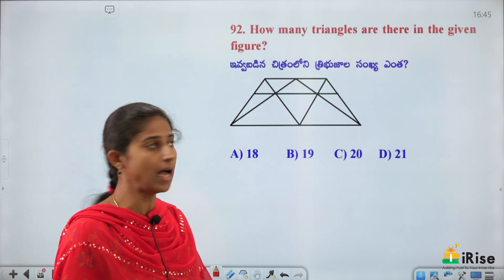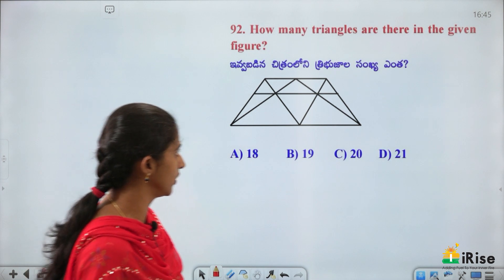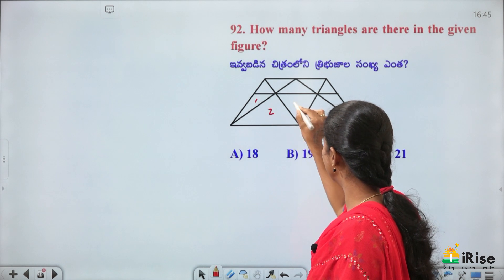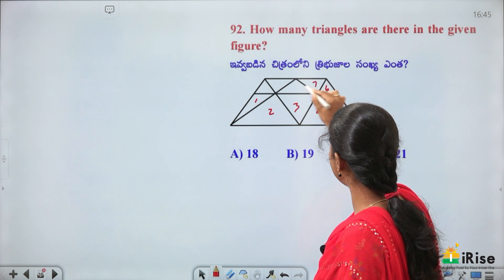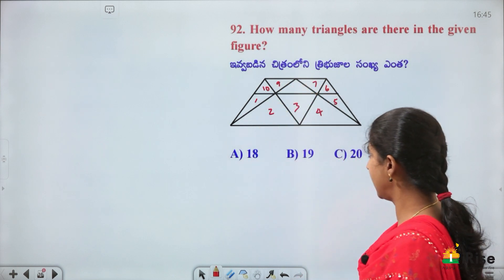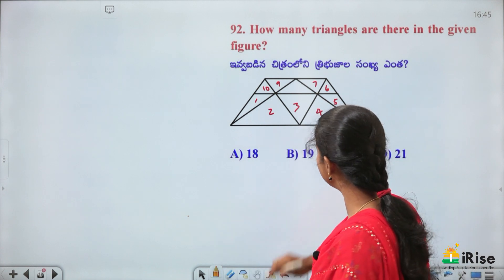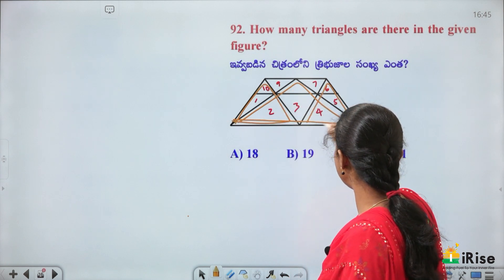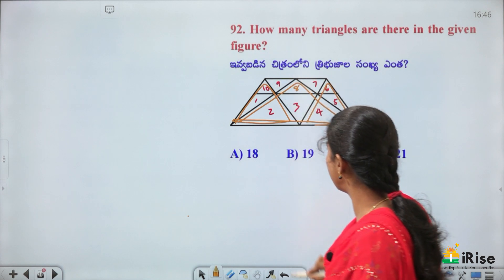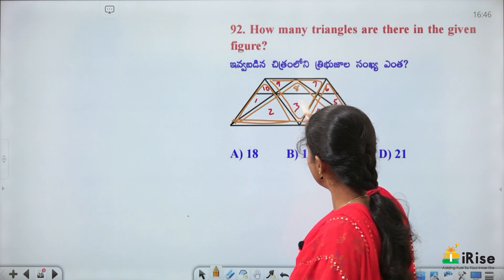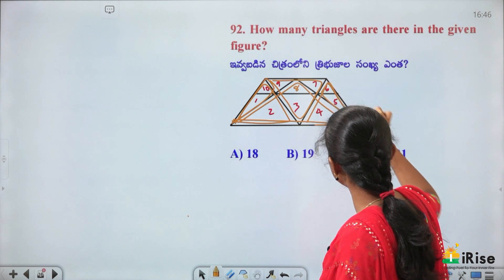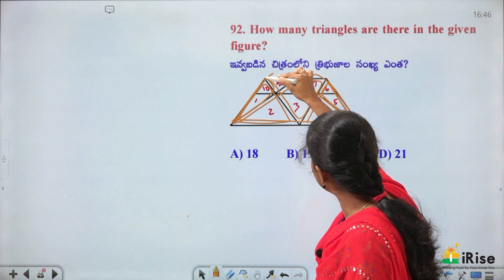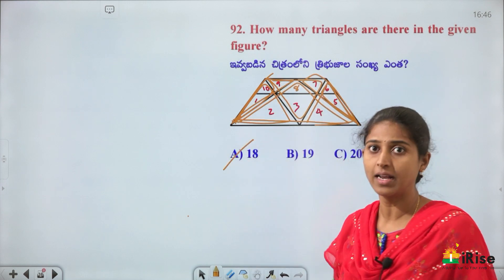Count the number of triangles in the given figure. Counting: small individual triangles 1 through 10; larger combinations: 11, 12, 13, 14; bigger ones: 15, 16; with intersections: 17, 18. Total triangles = 18.